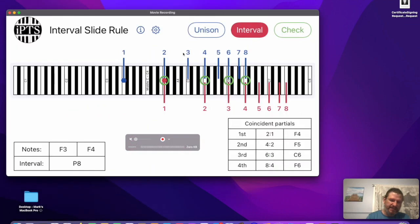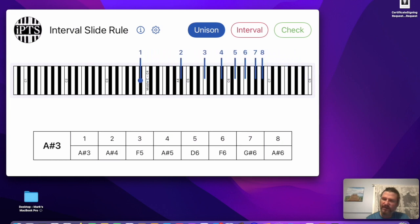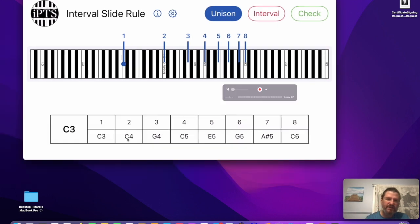So you click on it and basically all it does is it allows you to slide with your finger and read off the partial series above any note. So if we drop it on C3, you can see the first partial C3, C4, and then the fifth is in there, G5, and then you've got the dominant seventh chord. C, E, G, B flat, A sharp, and C.